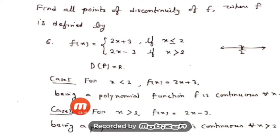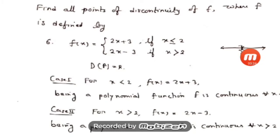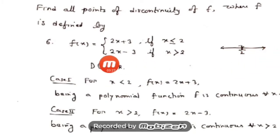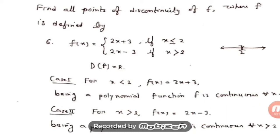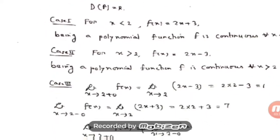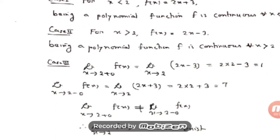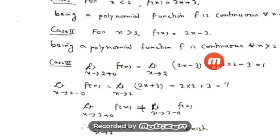For Case 2, when x is greater than 2 — the interval 2 to infinity — the function is defined by 2x − 3. This is also a polynomial function. Being a polynomial function, f is continuous for all x greater than 2.